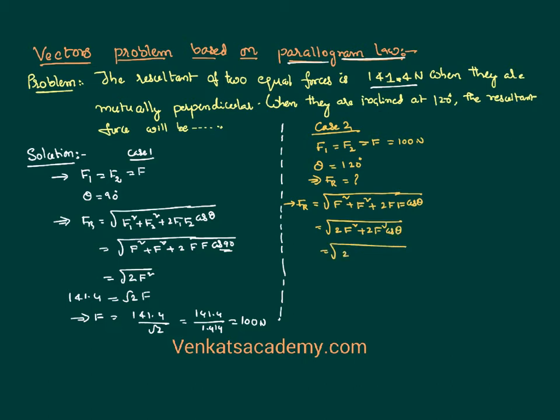So I can take 2F squared common: square root of 2F squared times (1 + cos(θ)). You know in trigonometry there is a formula: 1 + cos(θ) equals 2·cos²(θ/2). This is a basic formula in trigonometry.